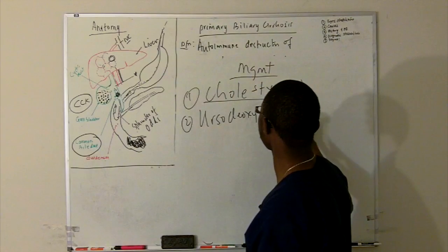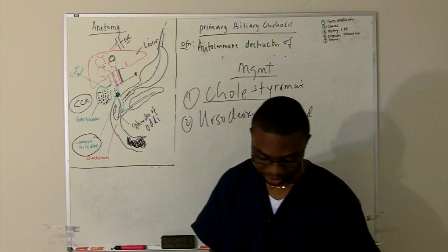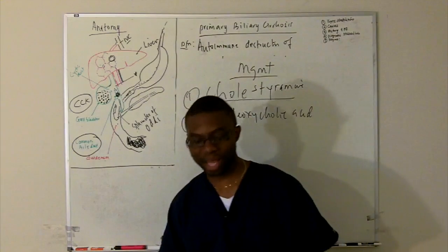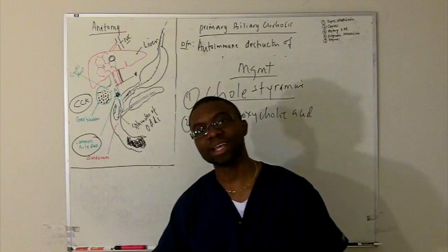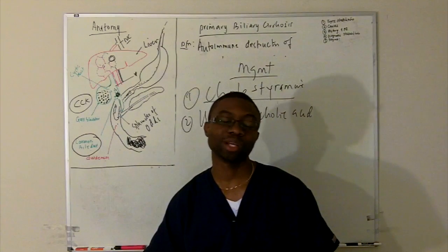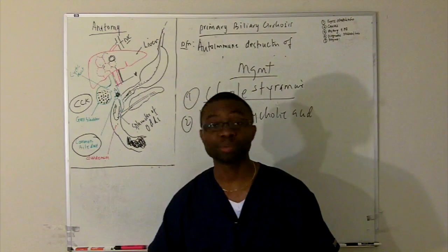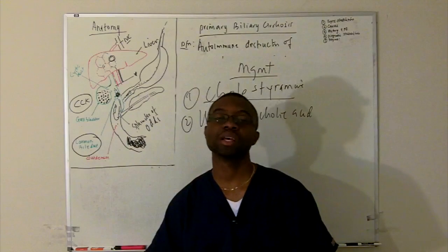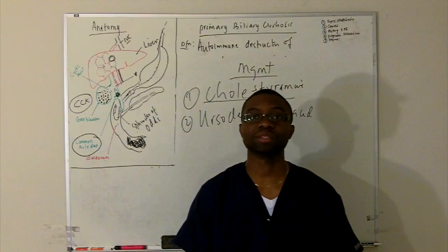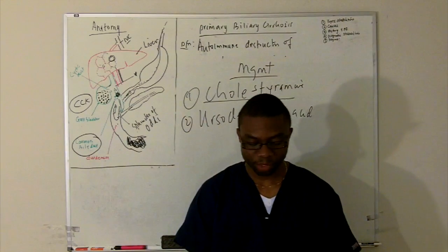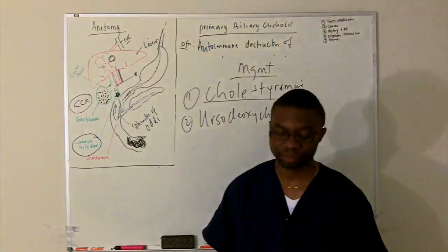We also give ursodeoxycholic acid — another medication for this patient. It's a hydrophilic bile acid that slows the progression of the disease. At the end of the day, the prognosis for this patient is really bad and we're going to have to do a liver transplant. We have to put this patient on the liver transplant list to get a new liver — that's the only way to get the disease out.